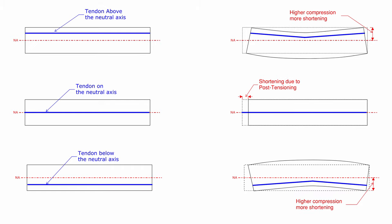And the inverse will happen as well. When it's on the bottom it'll cause a hogging force. So from this we can apply this to when we're applying drapes in the structure.